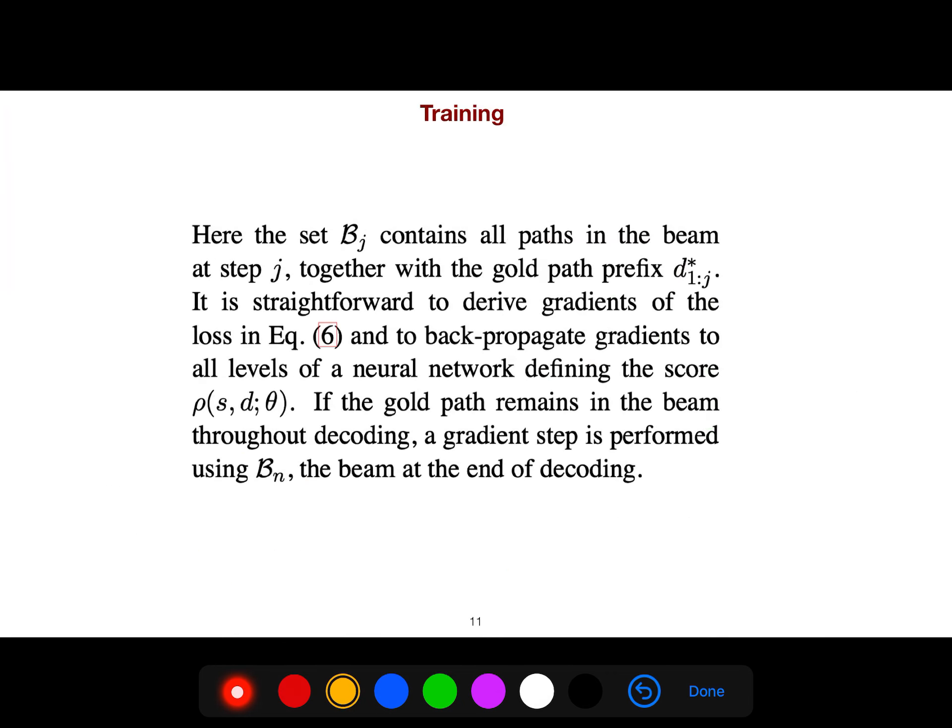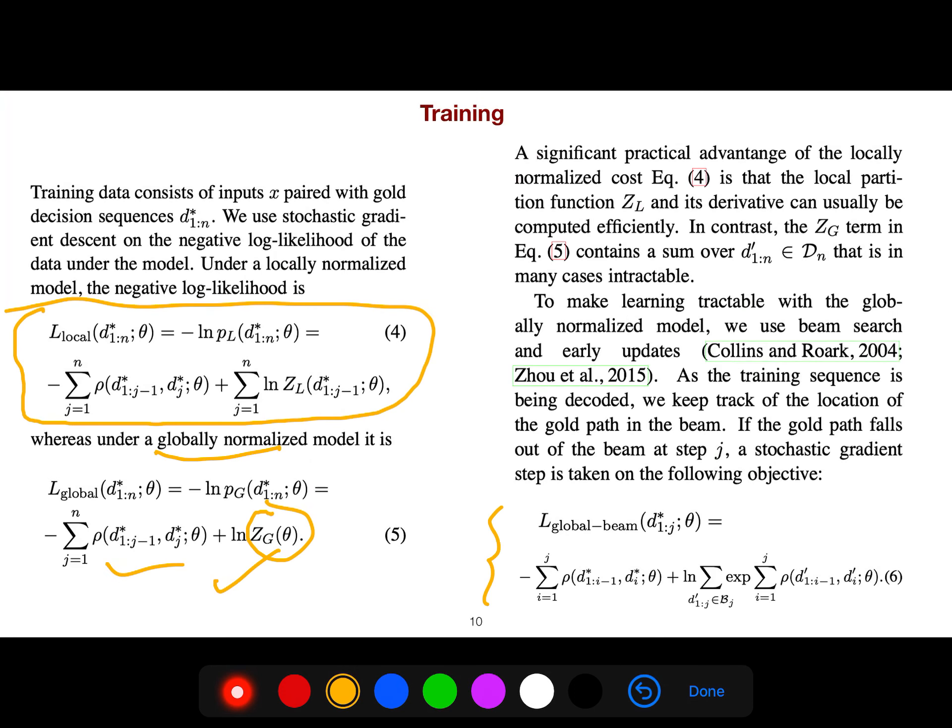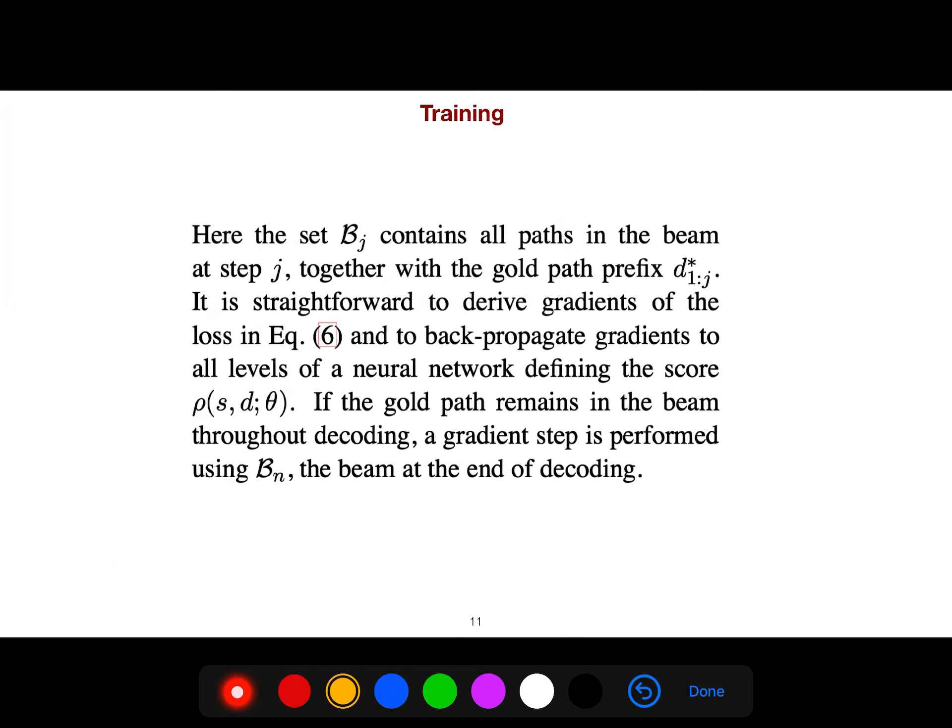We use back propagation using equation 6 and back propagate gradients to all levels of a neural network defining the score. If the gold path remains in the beam throughout decoding, a gradient step is performed.